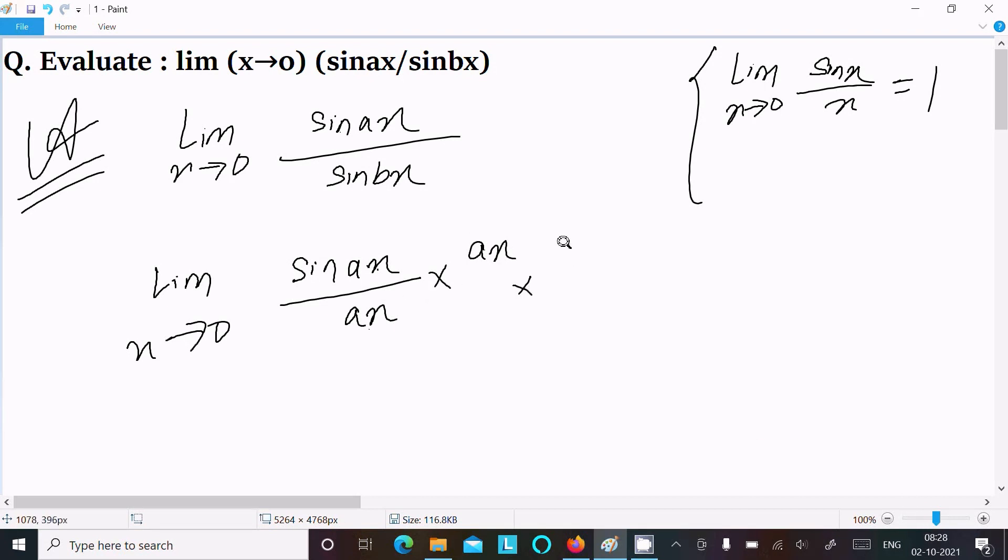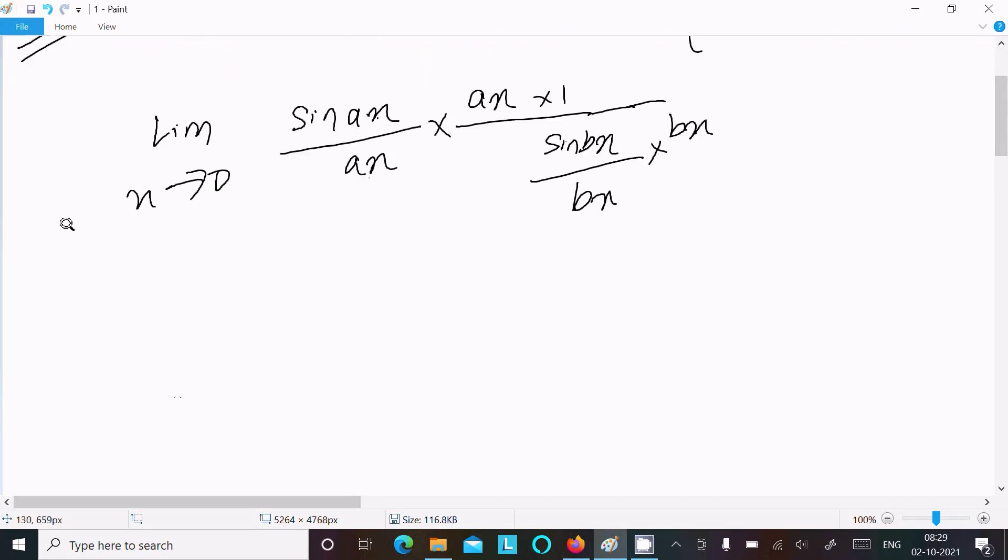Now thereafter we can write, so this here sin(bx), we require here bx. We need to divide so we need to multiply bx here. This does cancel, there is no any effect.